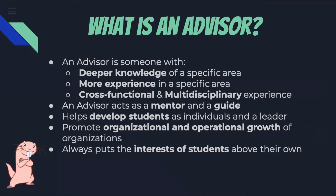So what is an advisor? An advisor is somebody with a deeper knowledge of a specific area — someone who has more experience in a functional area — and they also have cross-functional and multidisciplinary experiences. Student leaders may be siloed in certain areas like fraternity and sorority life or multicultural student organizations, whereas advisors have cross-functional understanding of multiple areas of student affairs, student organizations, past leadership or volunteer roles, and facilitation experiences. An advisor acts as a mentor and a guide to student leaders, helps develop students as individuals and as leaders, promotes organizational and operational growth of student organizations, and always puts the interests of the student above their own.